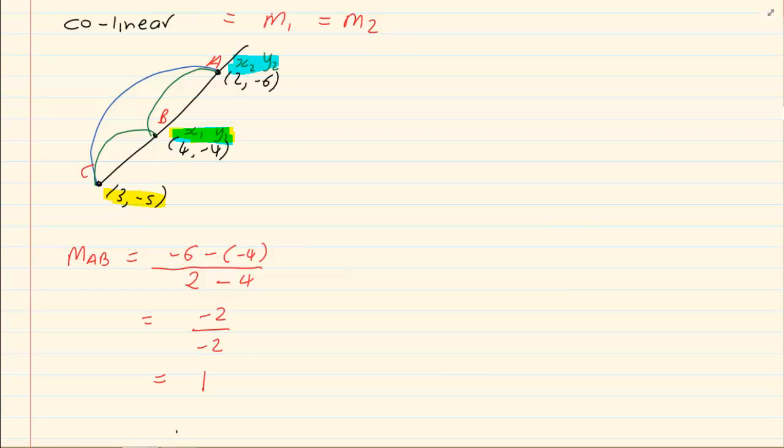So, we have already got B as x1 and y1. So, we are going to make C as x2 and y2. Now, let's calculate the gradient of BC. y2 is minus 5 minus minus 4 over x2 is 3, y1 is 4 so it's minus 4 which gives us minus 1 over minus 1 which is equal to 1.